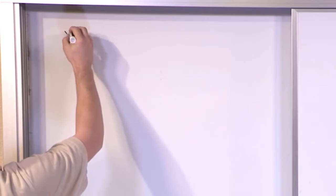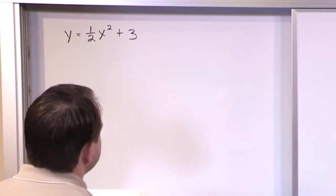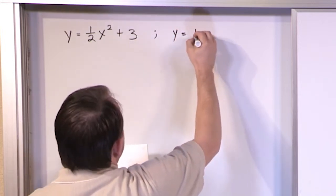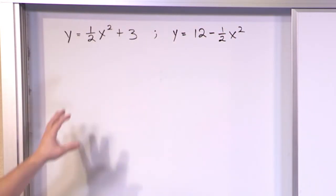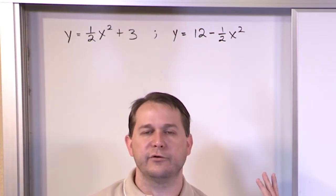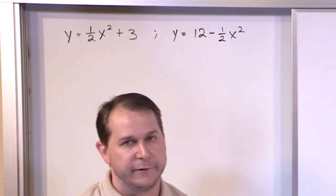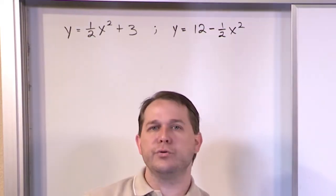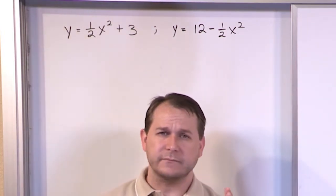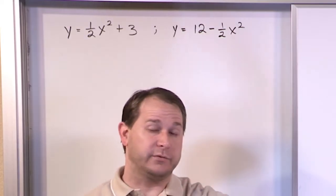On a test or exam, you might see a problem that gives you two functions. The first one: y equals one-half x squared plus 3. The second one: 12 minus one-half x squared. Typically before, we'd say find the volume between two graphs from A to B. Now, these two graphs actually cross — they're not parallel. We want to revolve the entire enclosed region between where they cross about the x-axis and find the volume of the resulting shape.